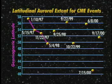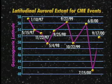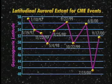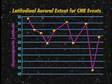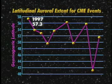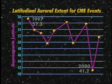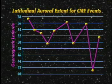The horizontal axis represents the dates of selected CME events. From analysis of this graph, we can determine that the latitudinal auroral extent generally increased from 1997 to 2000. Be careful in the way you interpret this graph.